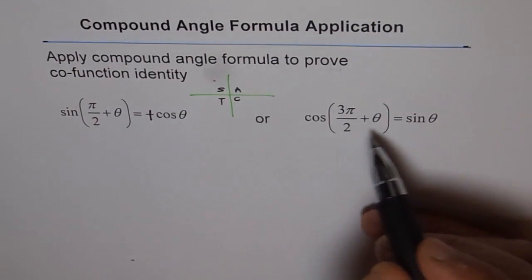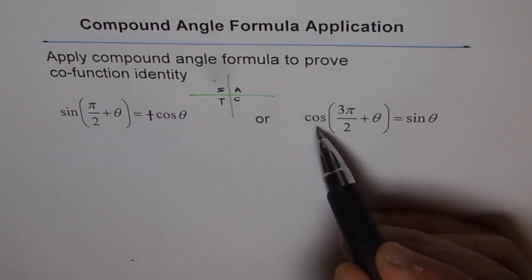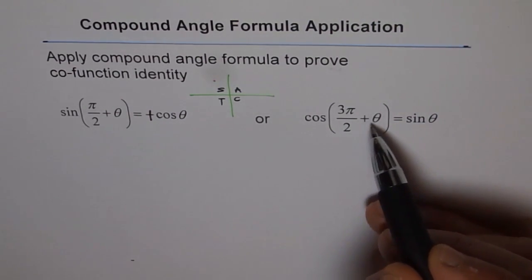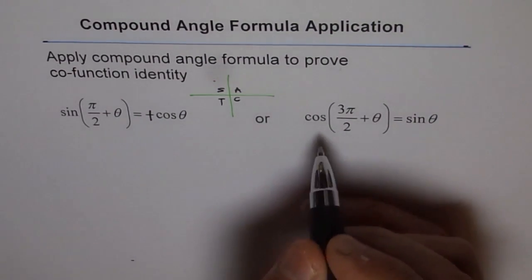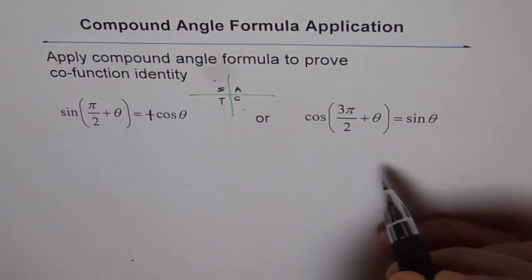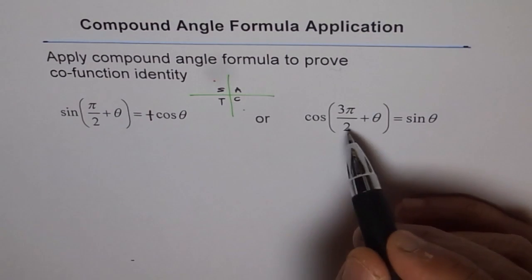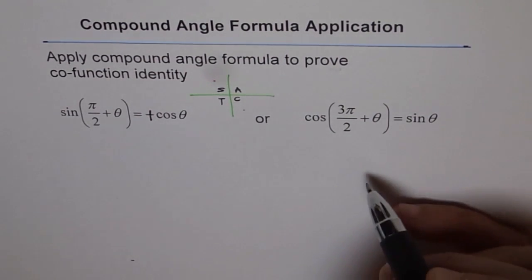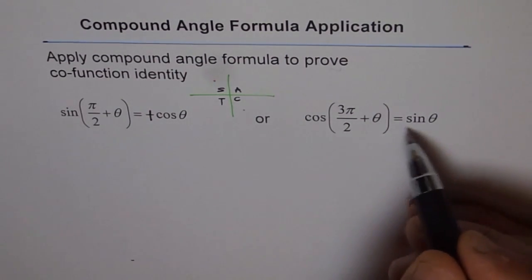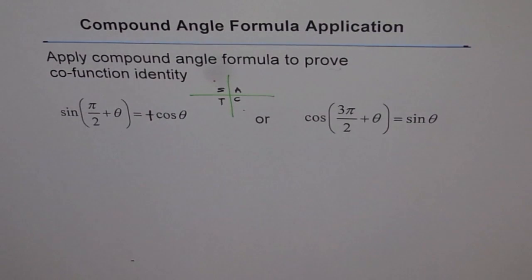Now let us look at cos of 3π/2 plus θ — that means cos is in this quadrant. Cos is also positive there, therefore sine will be positive as well. So these are the correct identities.